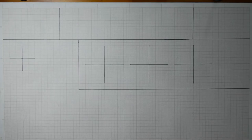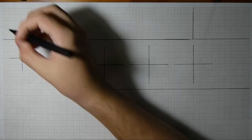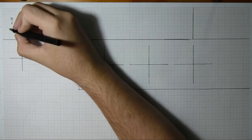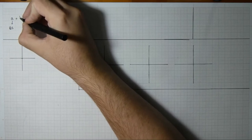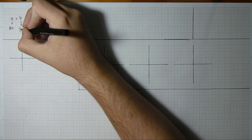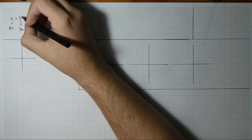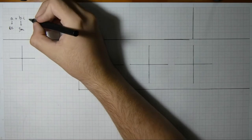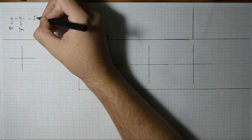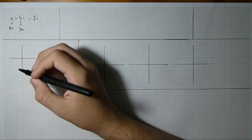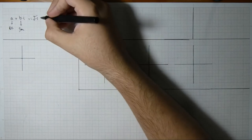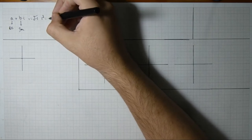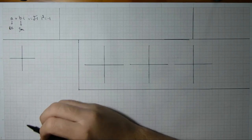Quick recap: what is a complex number and how do we multiply them? A complex number is basically just a real number A, called the real part, plus another real number B, called the imaginary part — B is multiplied by i. i is what we call the imaginary unit, defined to be the square root of minus 1. Why do we call it imaginary? Because it isn't real. There isn't a single real number equal to the square root of minus 1, because i squared would need to be minus 1, and no real number times itself gives a negative result.